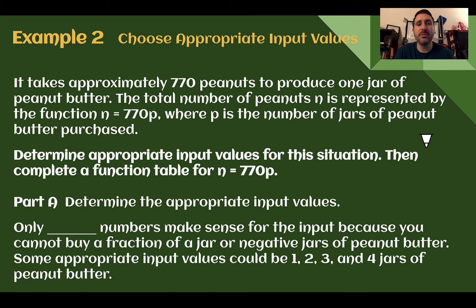So first in part a, let's determine the appropriate input values. Only whole numbers will make sense for the input here. You don't want decimals or fractions. You're not going to be able to buy a fraction of a jar of peanut butter. And you're also not going to be able to have negative jars of peanut butter. So we need our whole numbers, which are our positive counting numbers. So some appropriate values we could use would be like 1, 2, 3, 4, 5, etc. Those would make sense for the jars of peanut butter.